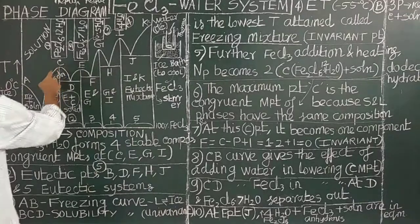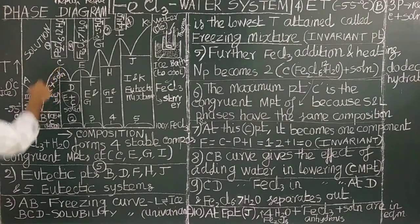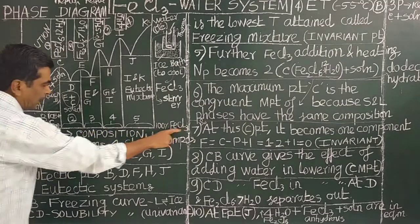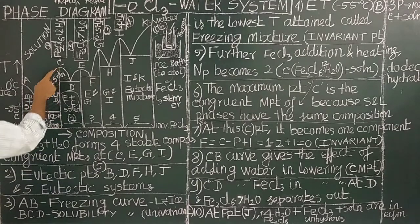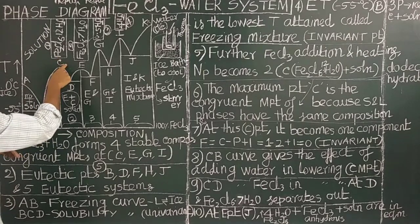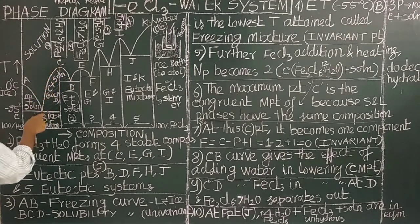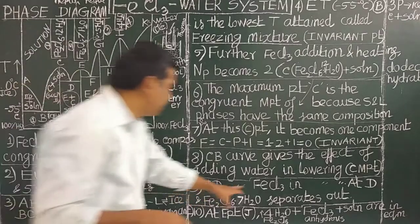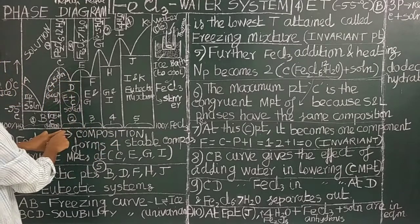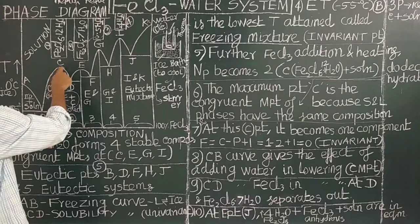The BC curve gives the effect of addition of water on the lowering of the congruent melting point. When you add water to the system, the congruent melting point decreases. Similarly, the CD curve gives the effect of addition of ferric chloride — the effect of adding ferric chloride on the lowering of the congruent melting point.